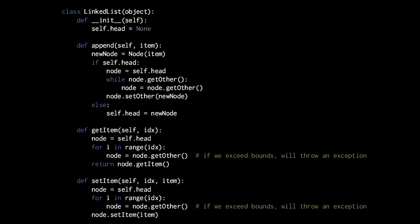As for our getItem method, it simply has one parameter — idx, short for index — which is the zero-based numeric index of the item we want. So say if index is the value 4, then we loop to the fourth item in the list, the fourth node, and then retrieve that value from that node with node.getItem — and that's the value we return.